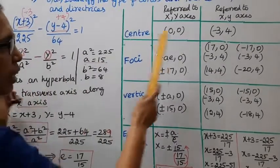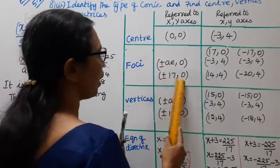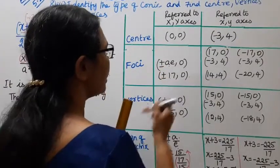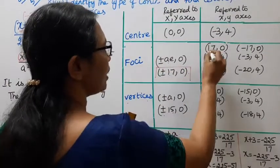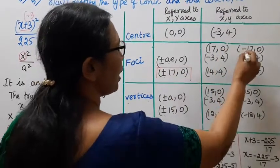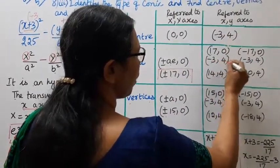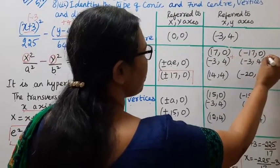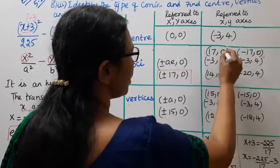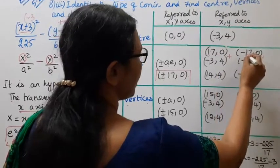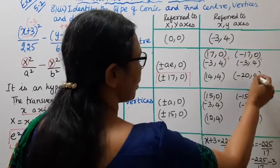Converting foci to small x, y: center is at (-3, 4). Adding ±17 to -3: foci become (-3+17, 4) = (14, 4) and (-3-17, 4) = (-20, 4). So the foci in small x, y are (14, 4) and (-20, 4).